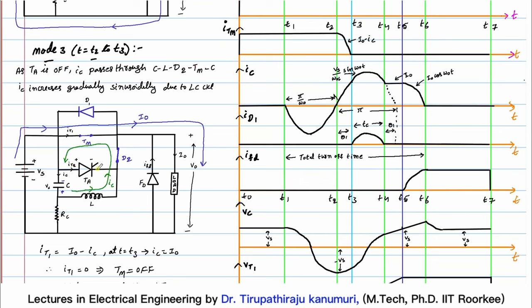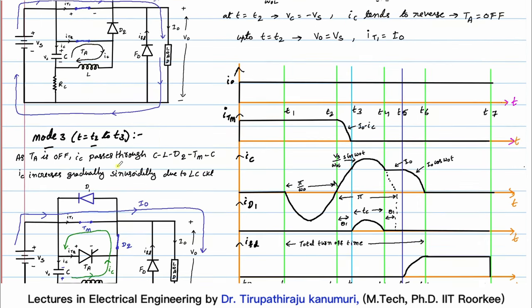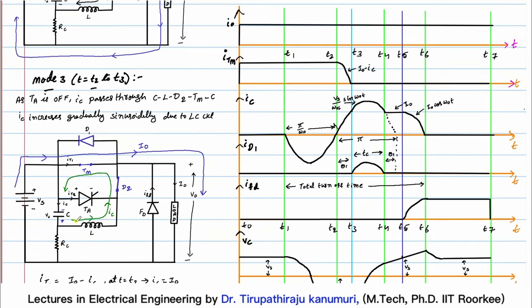When the auxiliary thyristor turns off, the bottom plate is positive and is connected to diode D2's anode — so D2 becomes forward biased and acts as a closed switch. Current now circulates through D2 and back through the main thyristor Tm. The net current through Tm is I0 minus IC. As long as this is positive, Tm continues to conduct. The current IC rises and then decays in this new loop.